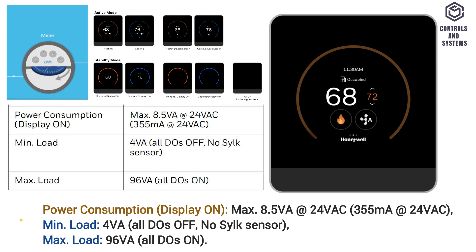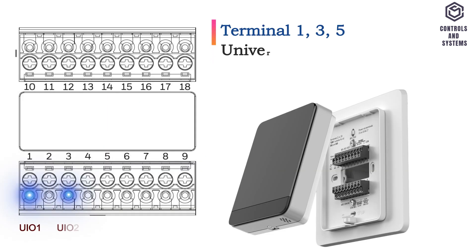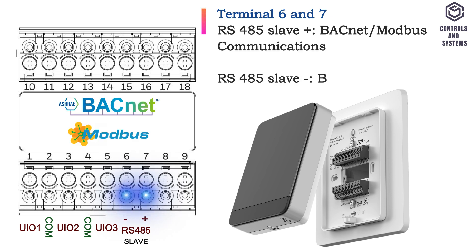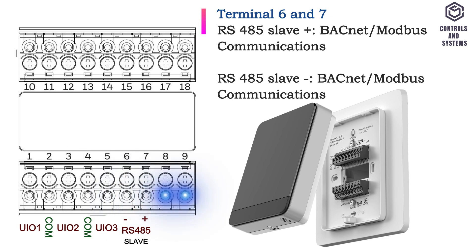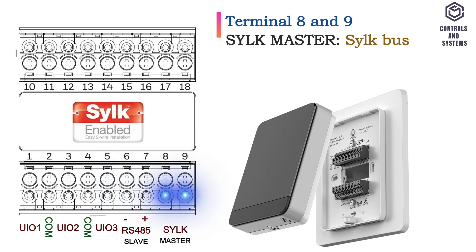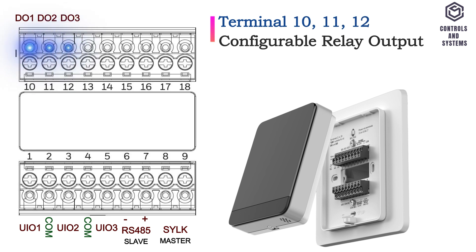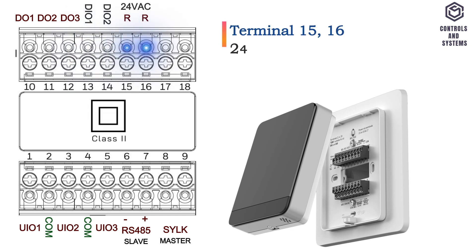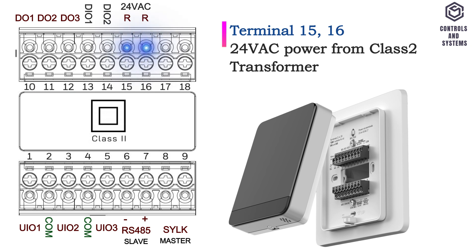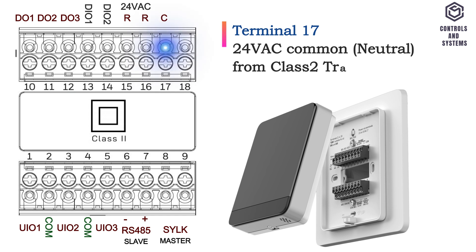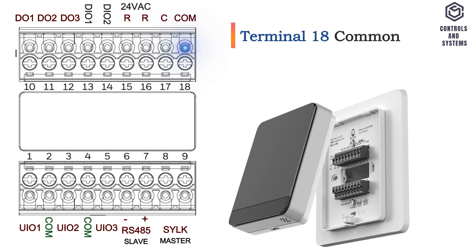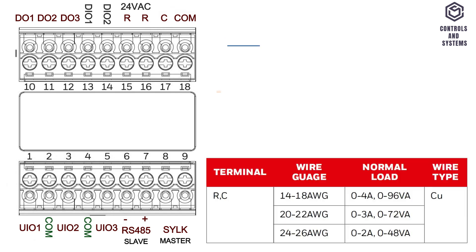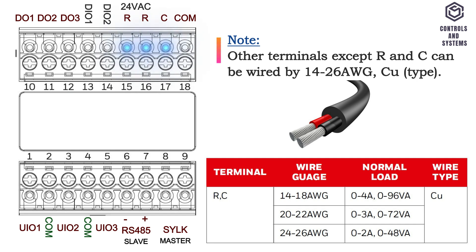Terminal Identification. Terminals 1, 3, and 5 are universal input or output. Terminals 2 and 4 are common. Terminals 6 and 7 are RS-485 slave for BACnet or Modbus communications. Terminals 8 and 9 are Silk master Silk bus. Terminals 10, 11, and 12 are configurable relay output. Terminals 13 and 14 are configurable relay output. Terminals 15 or 16 are 24 volt AC power from Class 2 transformer. Terminal 17 is 24 volt AC common or neutral from Class 2 transformer. Terminal 18 is common. Note: terminals 2, 4, and 18 are common, suitable for all DIO and UIO. Other terminals except RNC can be wired by 14 to 26 AWG copper.